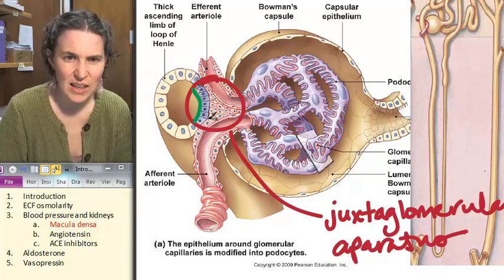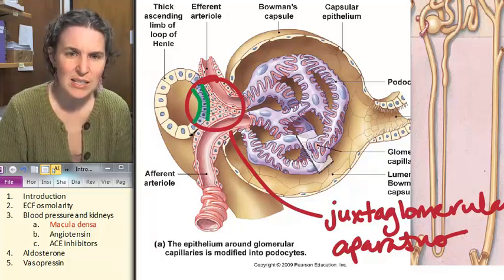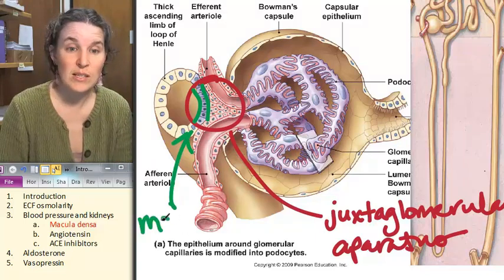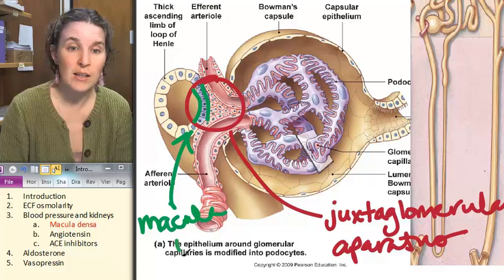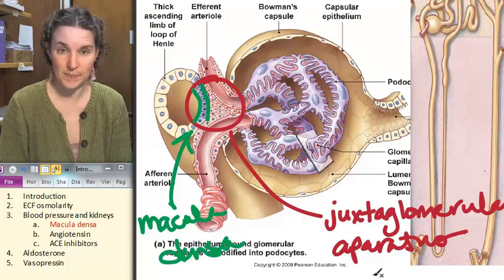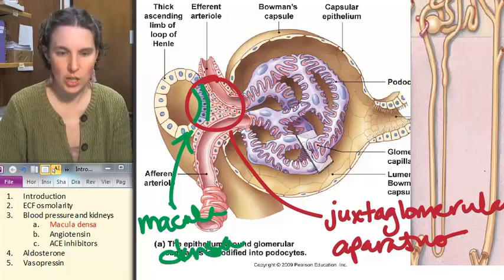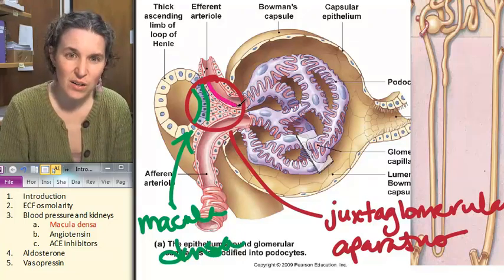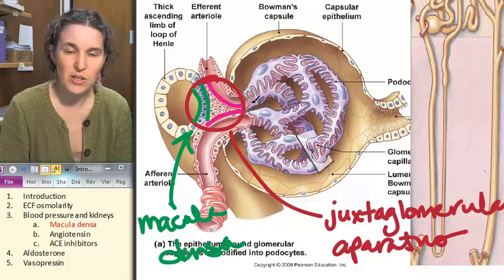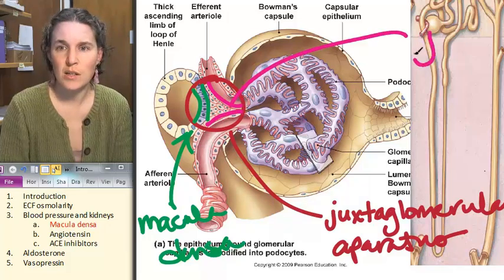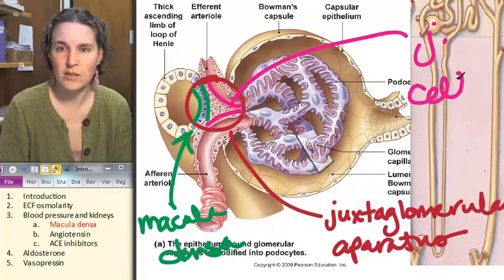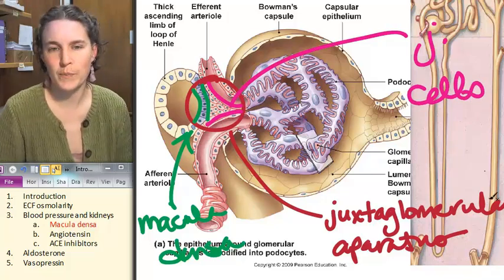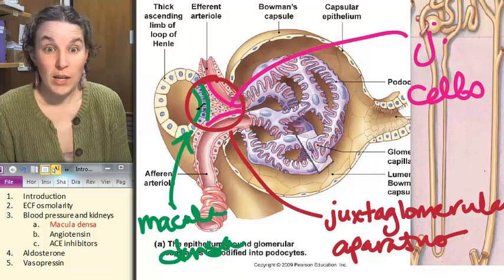The juxtaglomerular apparatus consists of the macula densa cells. The macula densa cells which are in the ascending loop of Henle. So these guys are the macula densa cells and the juxtaglomerular cells. These guys right here are the juxtaglomerular cells.